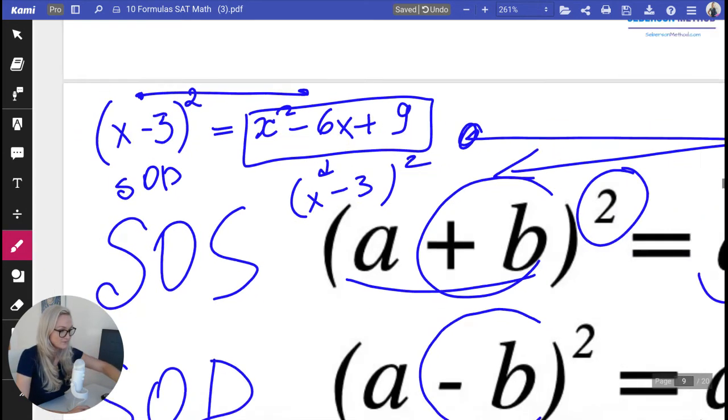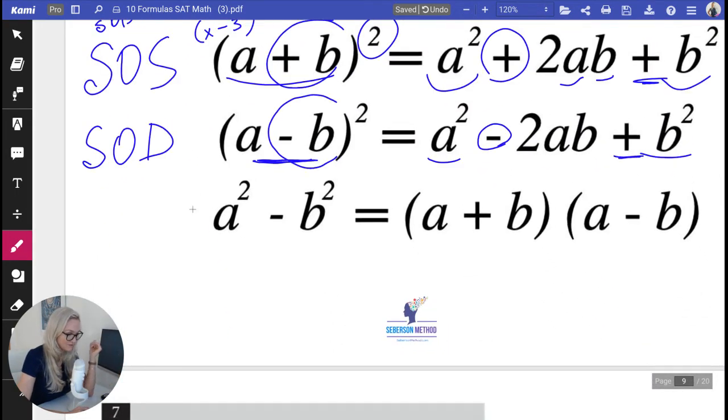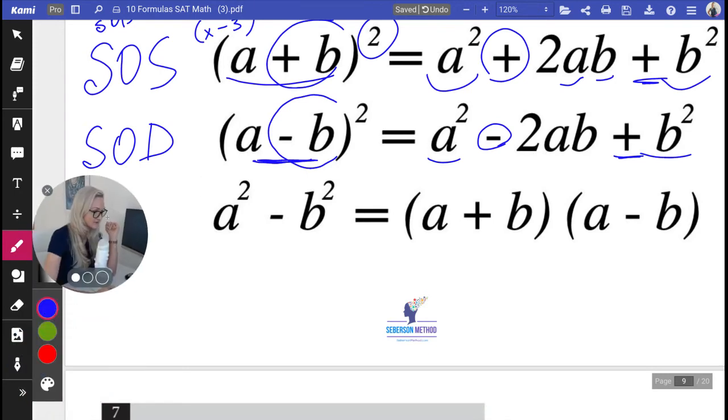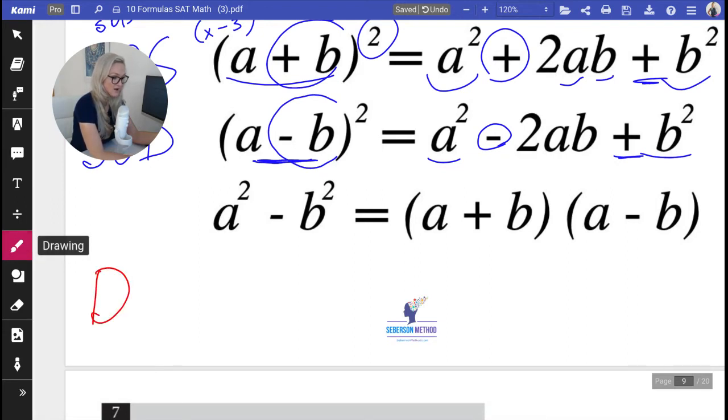Now we're going to go to the very last formula. And that formula is DOS. Let me move my face. DOS stands for difference of squares. We have the first square and we have the second square, and here we have its difference. It's going to equal to a plus b times a minus b.